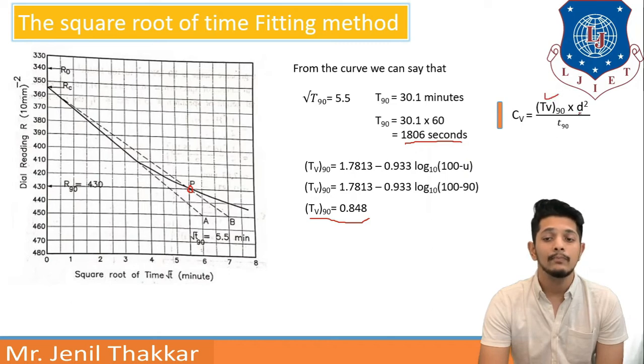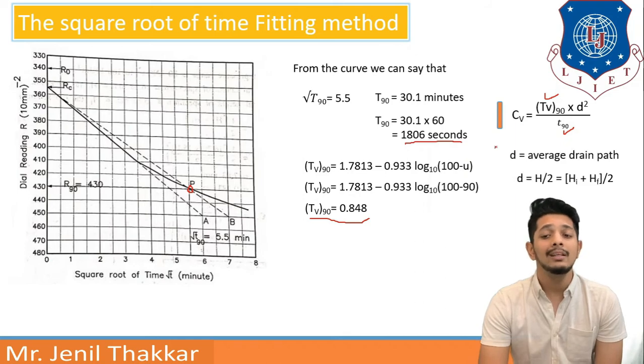So here I am putting u value as 90 and I am getting the answer as tv of 0.848. So I got my tv, I got t90 and I need d value. Now d is average drain path to reach the water.